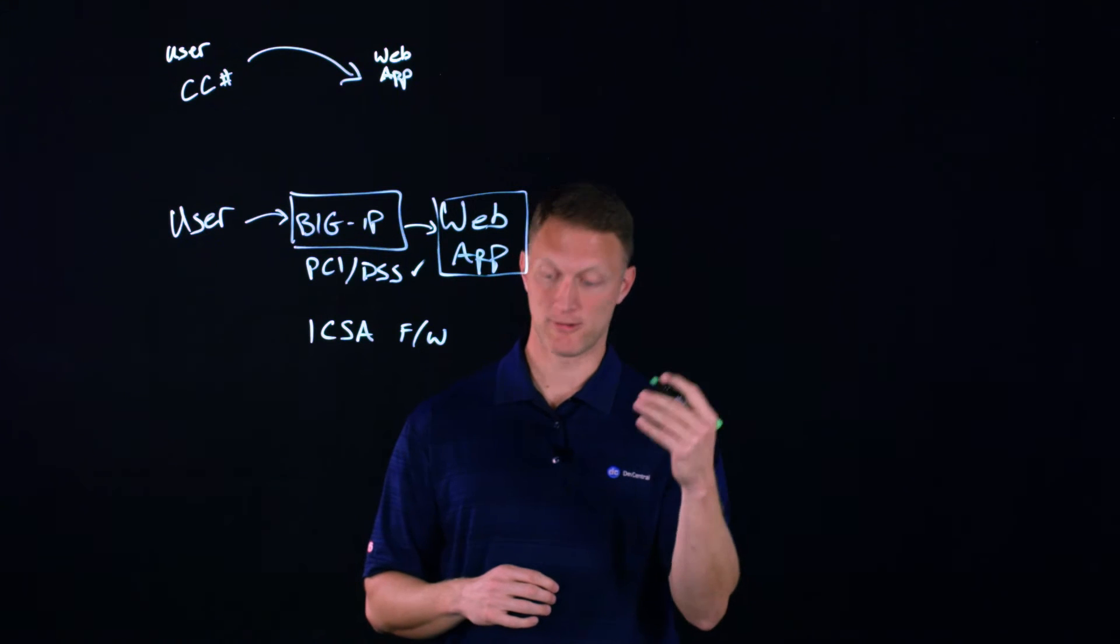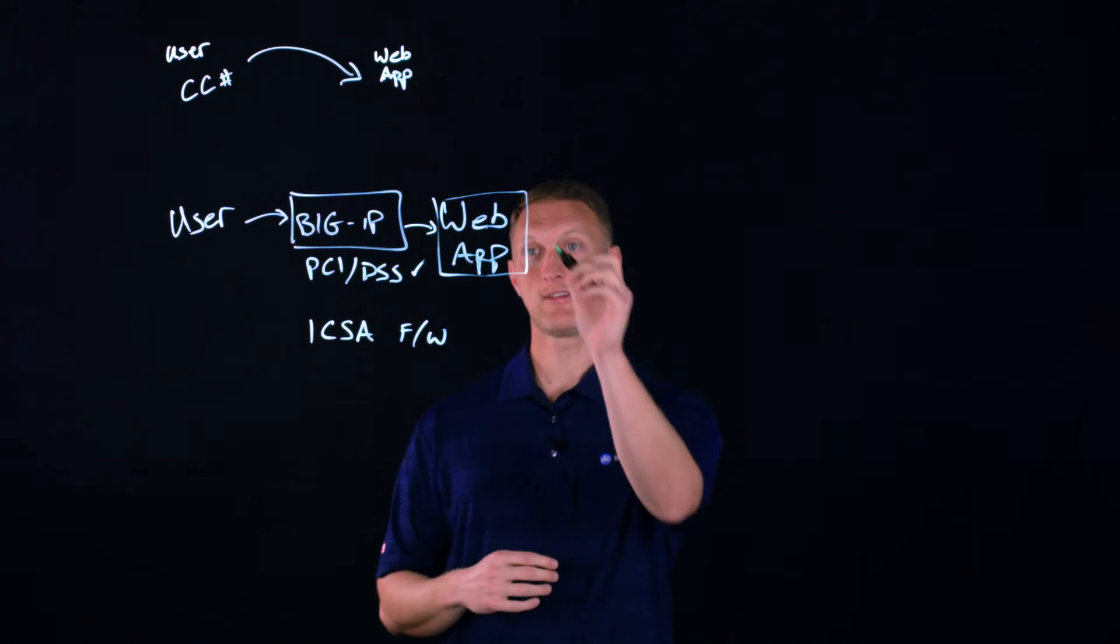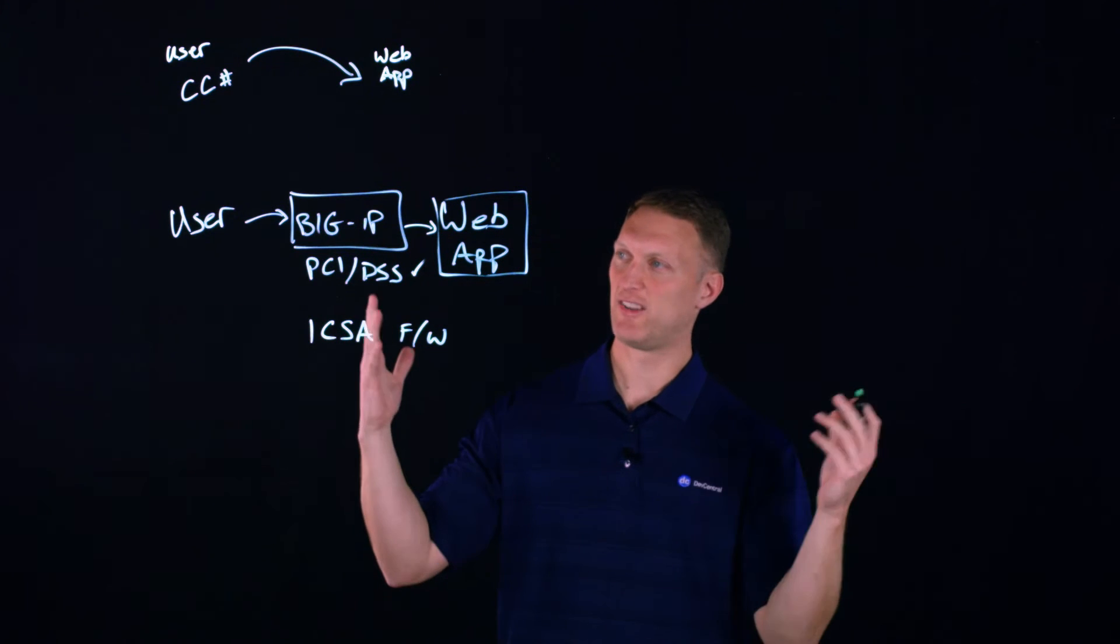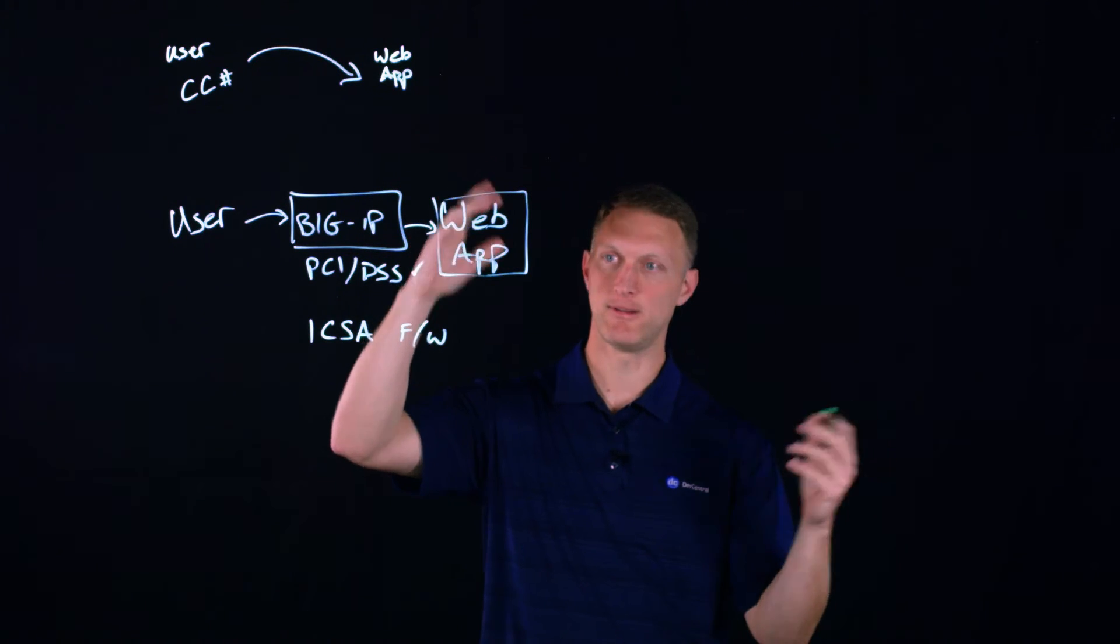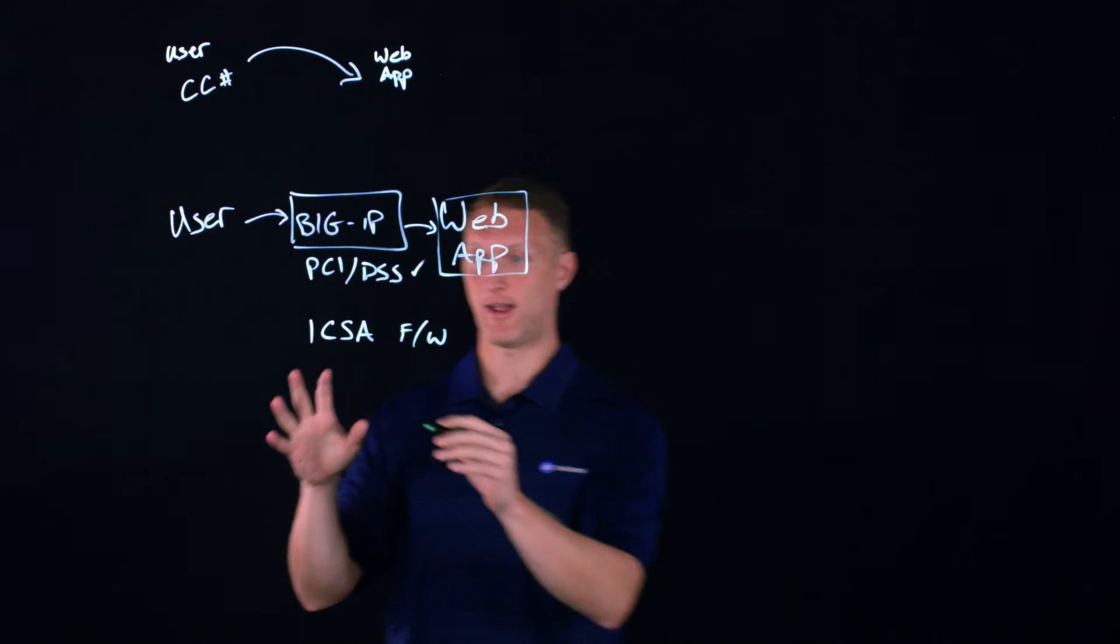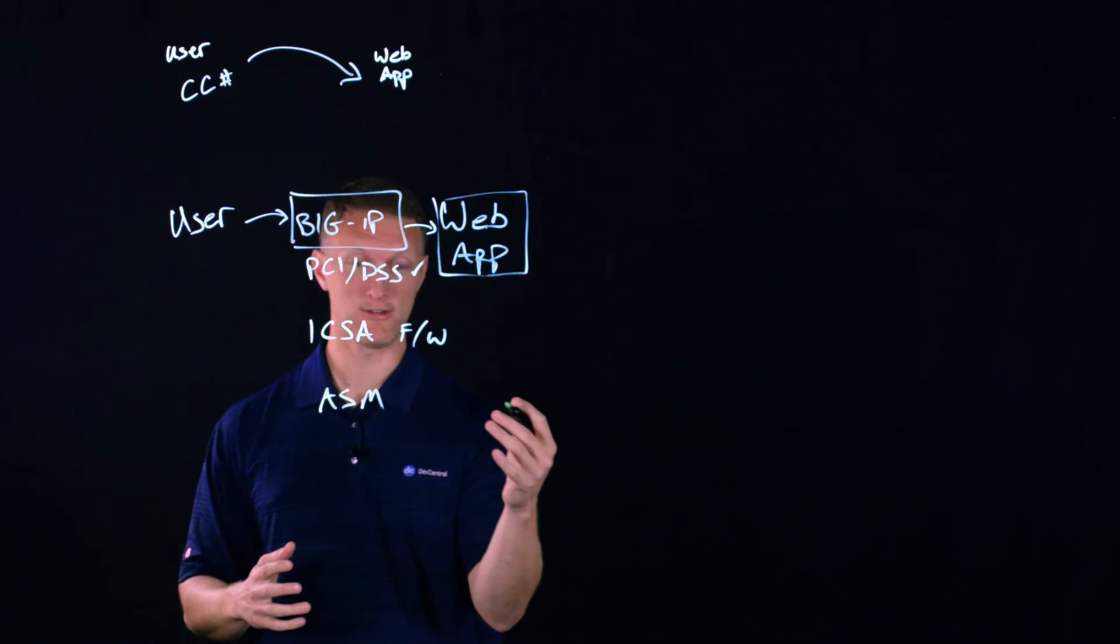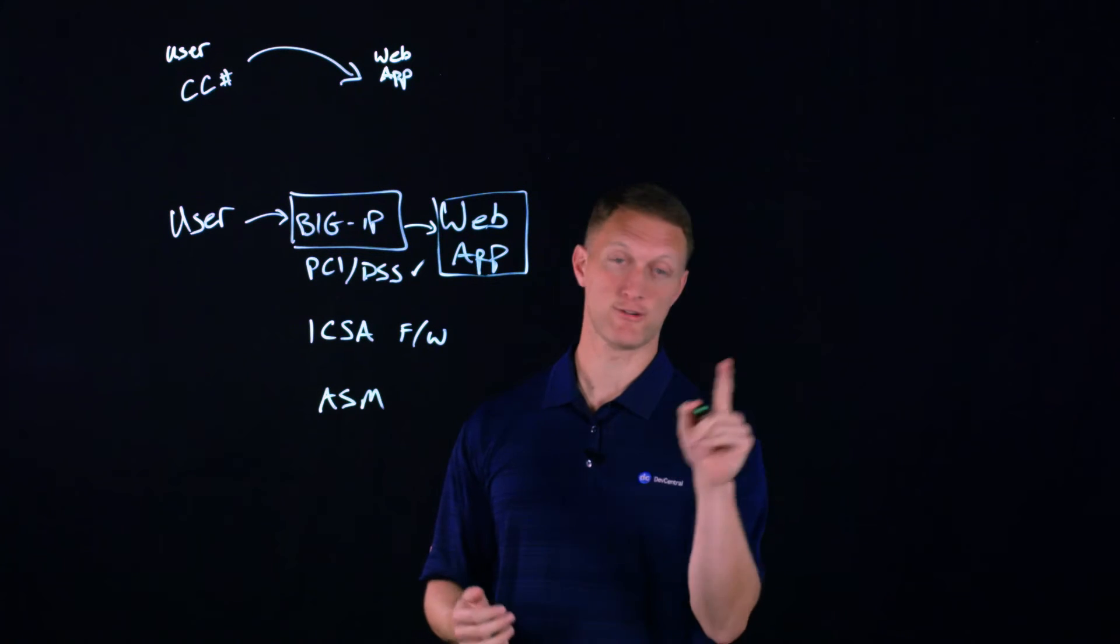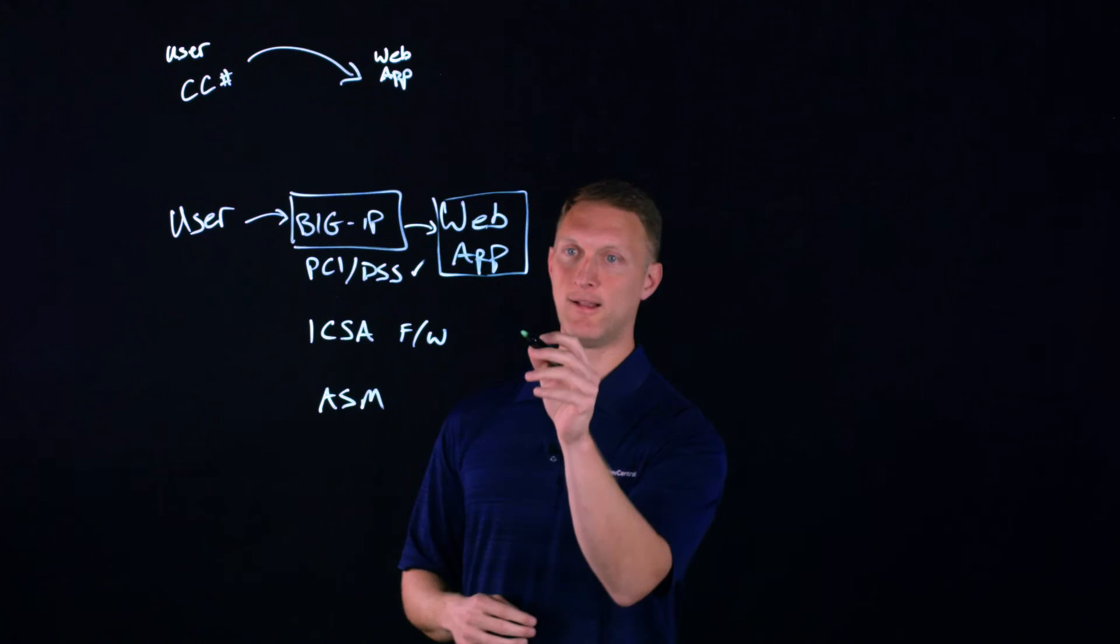And so another one is protect the credit card data itself. And so let's say the web application back here, again, we'll use say Amazon or whatever, some online marketplace. The user is going to come in and request that item and they're going to put in their credit card information. Well, a couple of things you can do with the big IP is our application security manager. The ASM has a feature. It's a credit card protection mechanism. There's also an iRule that does this, but now it's a built in feature in the ASM.